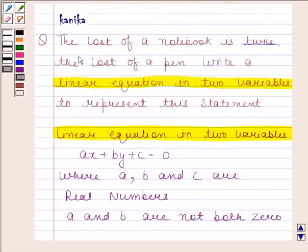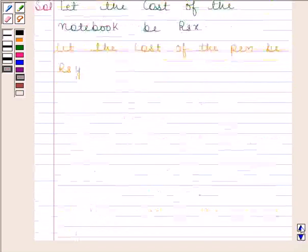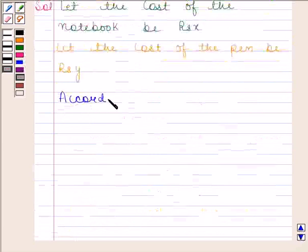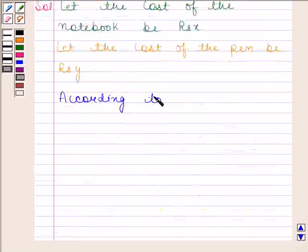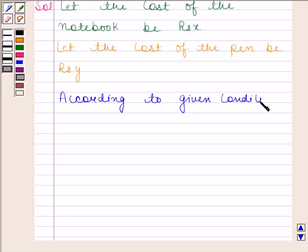Now cost of a notebook is twice the cost of a pen. So according to this condition, we can say that x minus 2y is equal to 0.